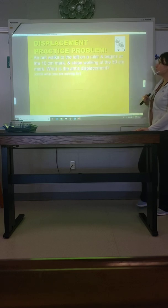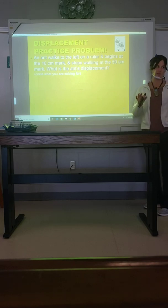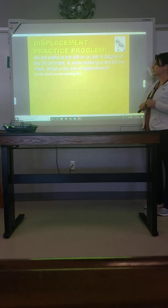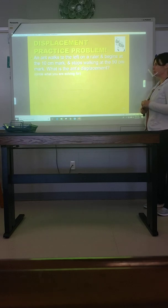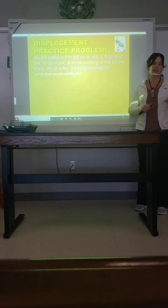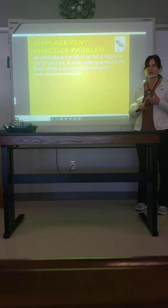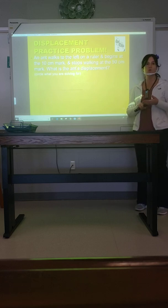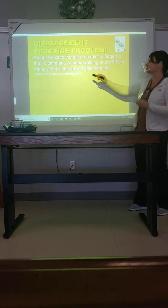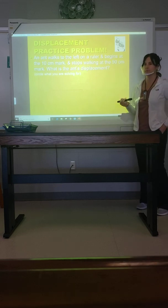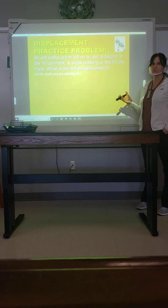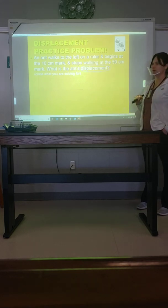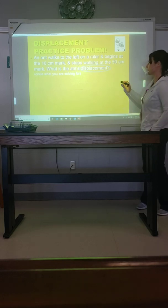An ant walks to the left, conveniently walking on a ruler, and begins at the 10-centimeter mark and stops at the 50-centimeter mark. What is the ant's displacement? Just like we did with density, we're going to underline things that are given to us as useful facts, and circle what we're trying to solve for. So we circle the word 'displacement.'